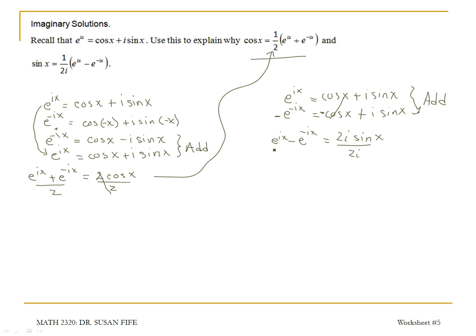Dividing both sides by 2i, I get sine x is e to the ix minus e to the negative ix over 2i. And, notice that that's this second identity. So, what this is saying is that, if you have solutions in the form of e to the ix and e to the negative ix, that you can perform a linear combination of those solutions,